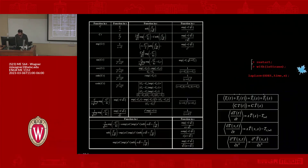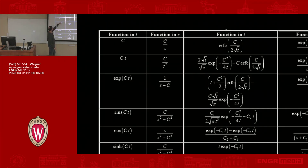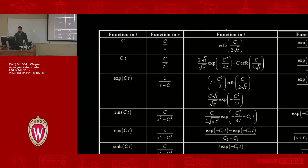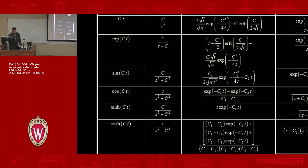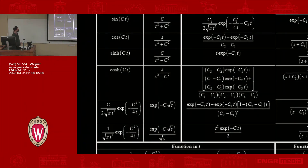You can go to tables where people have done this for common functions. Here's your function in time in one column, and you can see the corresponding function in S. We just did the top one — c transforms to c/s. If the function was c times t, you do the same thing and get c/s². If your function is e^(ct), it transforms accordingly. There are sines, cosines, sinh, cosh, and other equations common in certain applications.